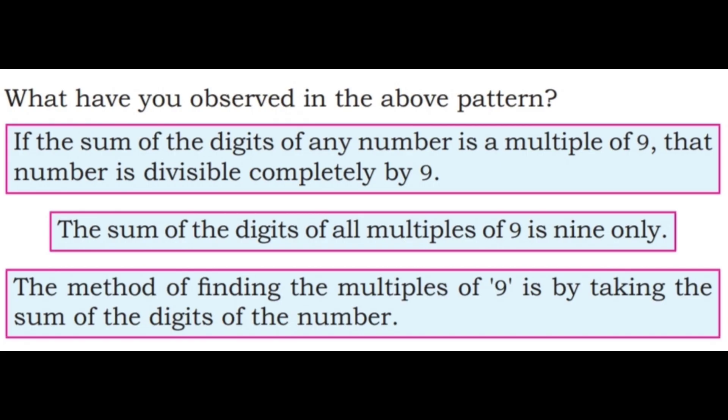What have you observed in the above pattern? If the sum of the digits of any number is a multiple of 9, that number is divisible completely by 9. The sum of the digits of all multiples of 9 is 9 only. The method of finding the multiples of 9 is by taking the sum of the digits of the number. So the 9 times table alone has this pattern.